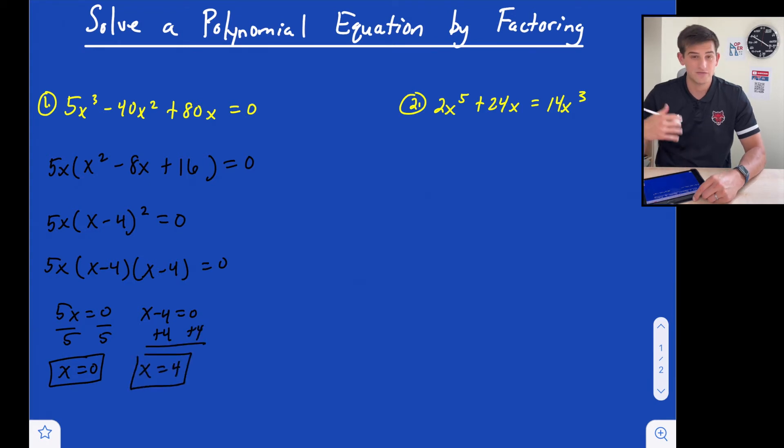Now we're only going to have two solutions or two roots for this equation because we had what's called a repeated root, since we had a perfect square trinomial and it factors as the square of a binomial. So we don't say x equals 4 and x equals 4. That's just the same thing. So we just have our two roots there.